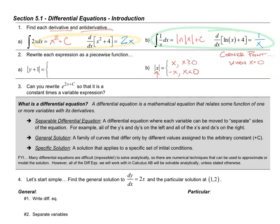Now let's look at how this works with the absolute value of y plus 1. It's a little tricky — we've got to consider that corner point, which is when y plus 1 equals 0, obviously when y equals negative 1. So the absolute value of y plus 1 will equal y plus 1 when y is greater than or equal to negative 1, and it will equal the opposite of y minus 1 when y is less than negative 1. Rewriting absolute value functions as piecewise functions is something we will be doing in this unit.